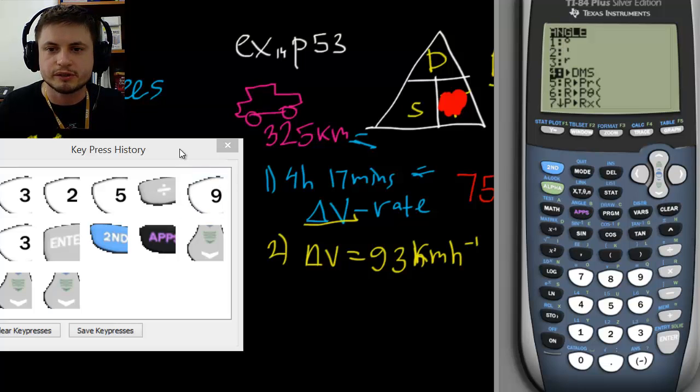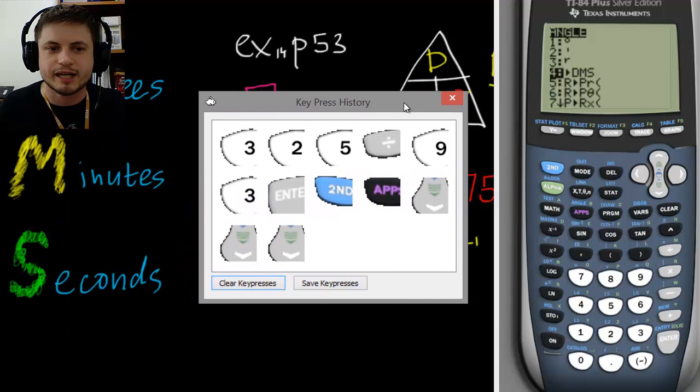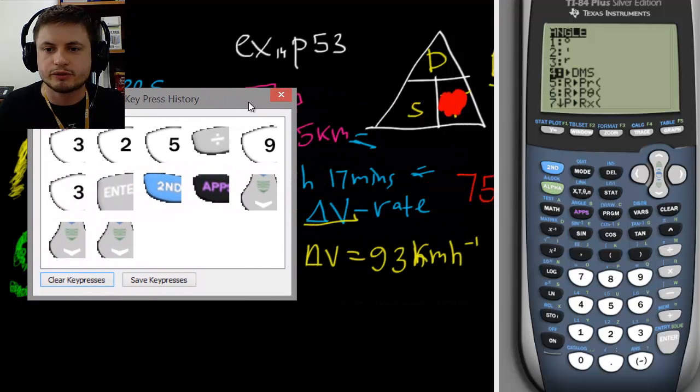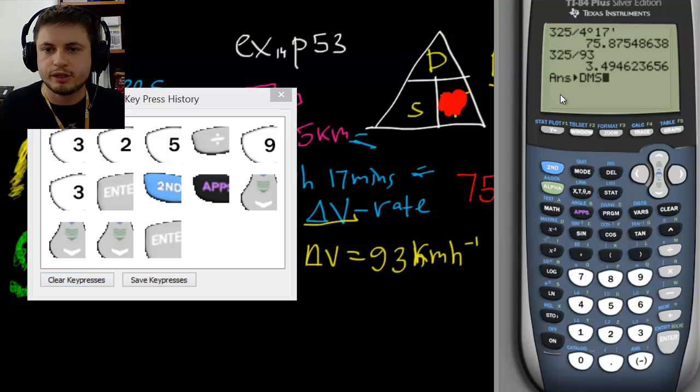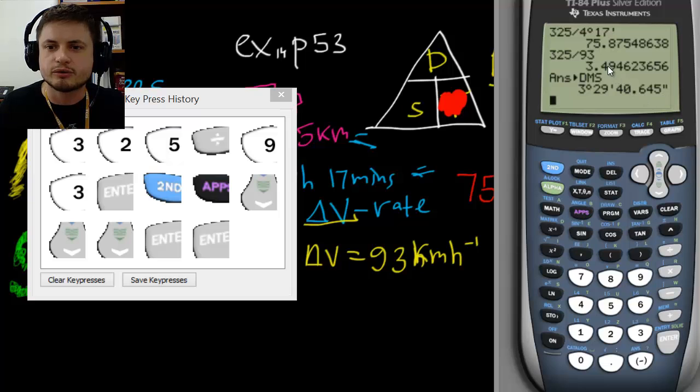It's written right here: degrees, minutes, seconds. In other words, you can convert this to degrees, minutes, seconds. So do this, answer to DMS. This will give us our answer in hours and minutes. And the answer is 3 hours, 29 minutes, 40 seconds, .645 microseconds. And so that's basically our answer.